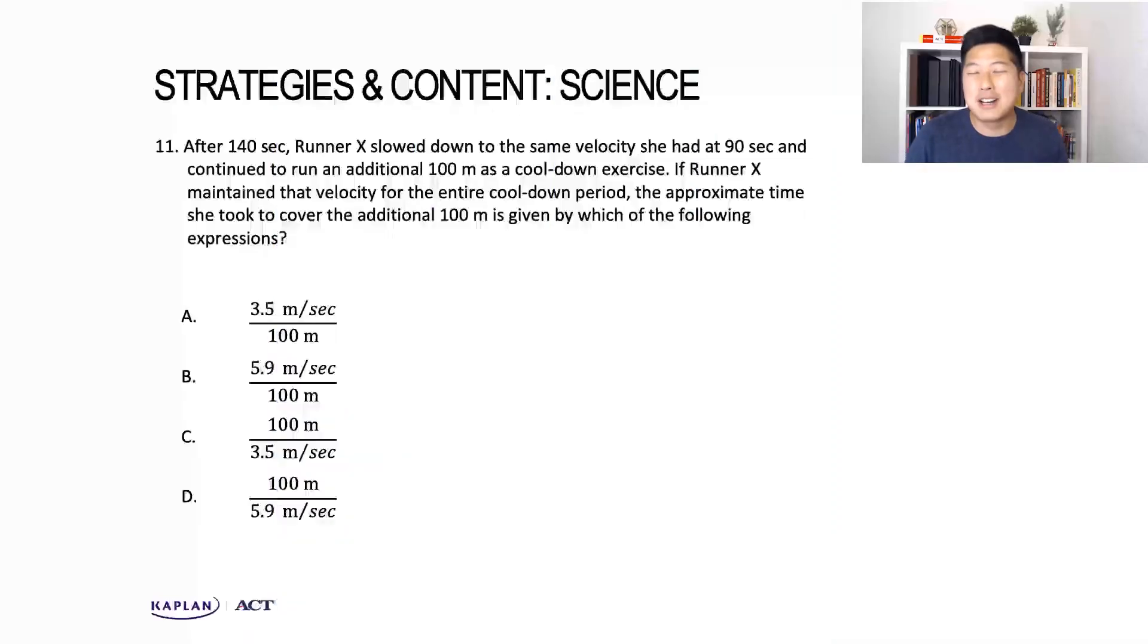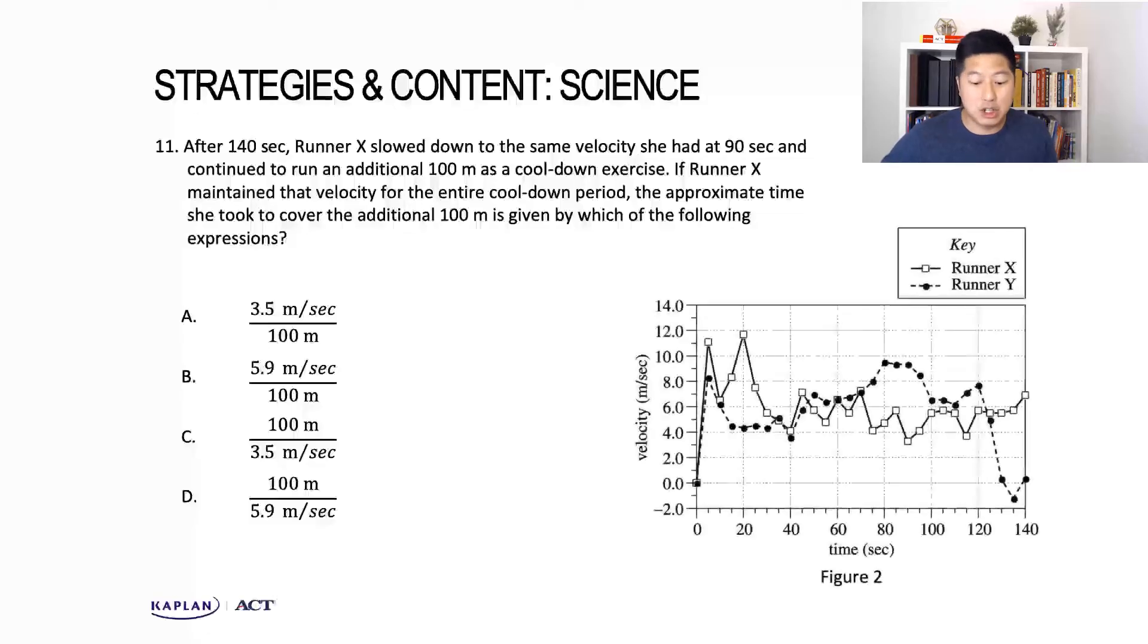In this question, we're going to have to do a little bit more work to get to our answer, but let's take it step by step. Again, we're asked about runner X and runner X's velocity, so we know we're looking at Figure 2. We need to look at the velocity runner X had at 90 seconds. At that data point, runner X is running at approximately 3.5 meters per second.